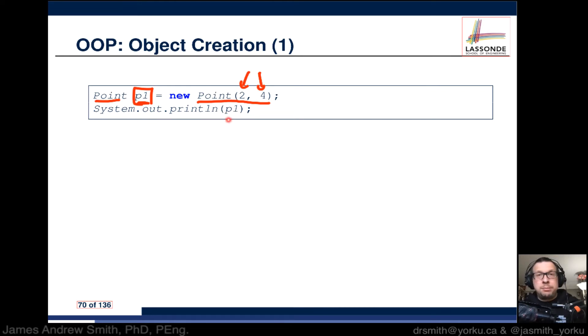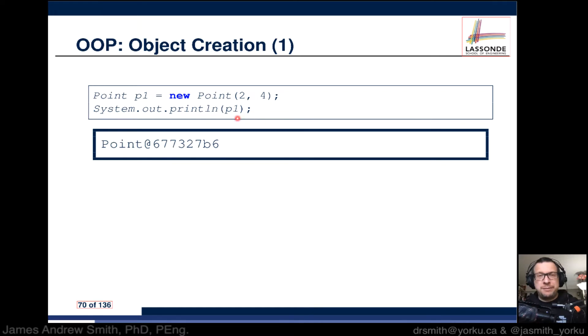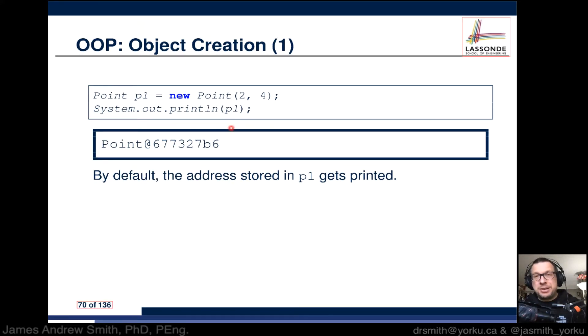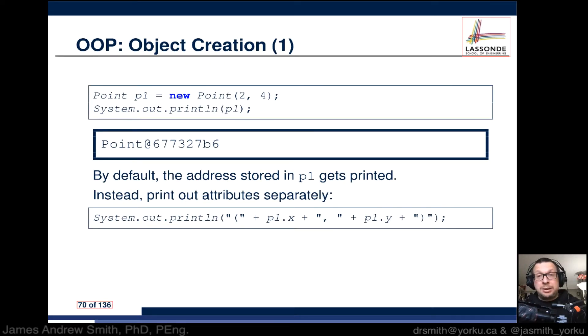So what does that do? Well, if I say system.out.println p1, then I might get something like this. Now if you do it, it'll look a little bit different—these numbers will be different—but what that is, it's the address, the location in memory where that object p1 is stored. If you think of an SD card, these objects would be stored somewhere inside the SD card and are written to and retrieved as needed. That's the address, that bizarre looking number right there.